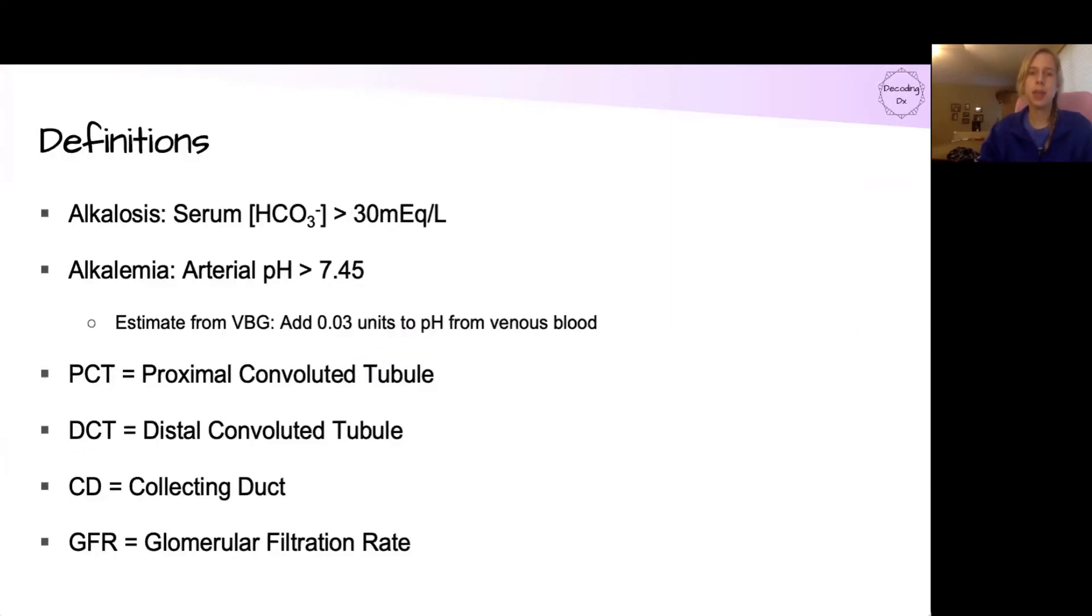First, let's start off with some definitions. Now it's important to note that normal ranges are just that, ranges, and we create cutoff values for the sake of definitions. But in general, an alkalosis is a serum concentration of bicarbonate greater than 30 mEq/L, and an alkalemia is an arterial pH greater than 7.45.